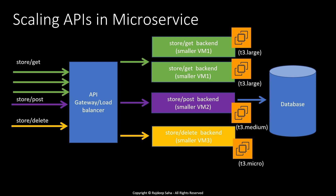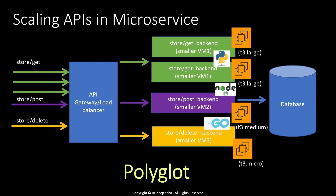Another advantage of microservices is that since all these backends are independent of each other and can be maintained by different teams, they can be written in different programming languages. For example, store/get could be written in Python, store/post in Node.js, and store/delete in Go. There is a fancy name for this feature — we call it polyglot.